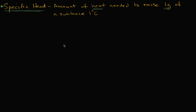Specific heat is telling us how much energy do I have to put into something to heat it up. For example, if I want to raise water one degree Celsius, I would have to put in a certain amount of heat, which would be different than, say, if I had sand.